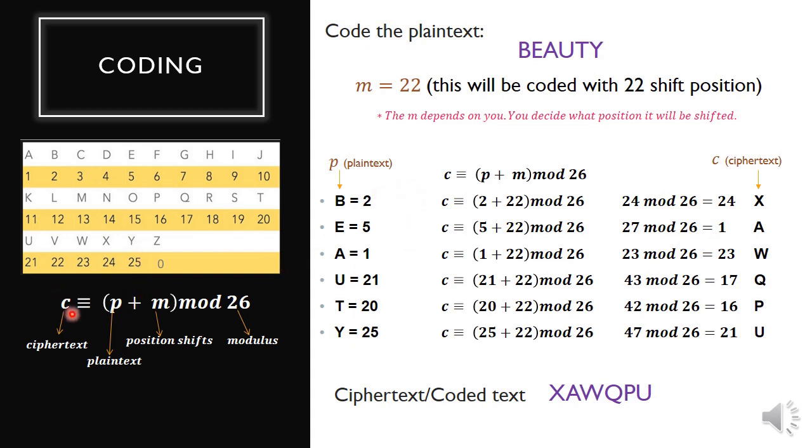Next, we're going to use the formula: C congruent to P plus M modulo 26. Your P is the plain text value, which is 2, plus M the position, which is 22, mod 26. So this would be 2 plus 22 mod 26, which equals 24 mod 26, which is 24 since it's less than 26. Next we have E, which is 5 plus 22 mod 26. That would be 27 mod 26, which exceeds 26, so we subtract 26, leaving a remainder of 1.